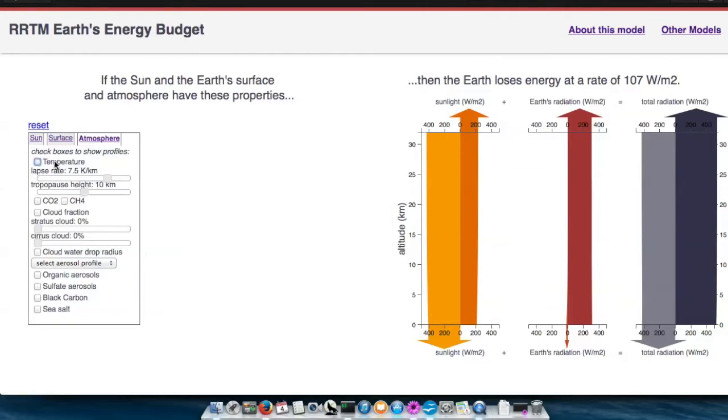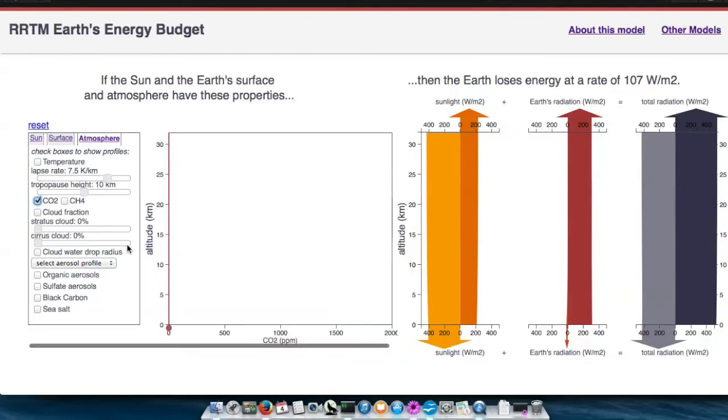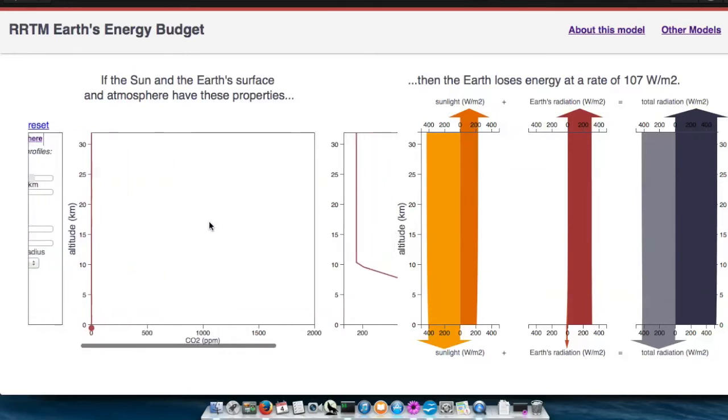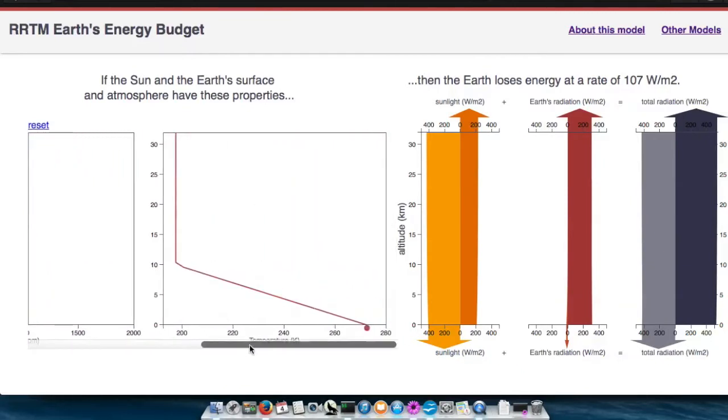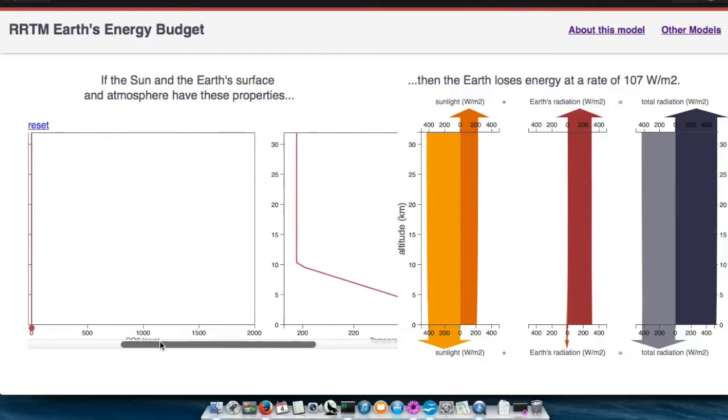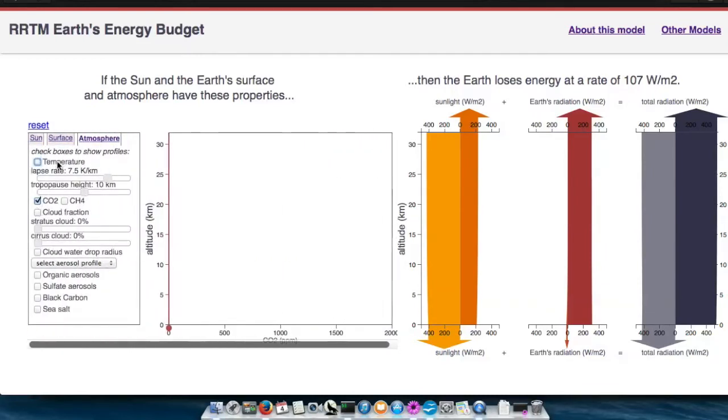You can make your atmosphere more radiatively active by turning on a greenhouse gas. So I just turned off the temperature profile and turned on the CO2 profile. You can leave them both on if you want to be able to see them both at once, and you can scroll back and forth. I'm using my trackpad. You can drag the scroll bar. I'm just going to turn it off for now.